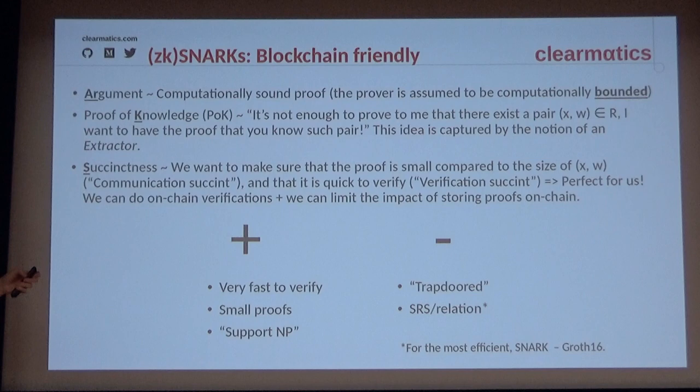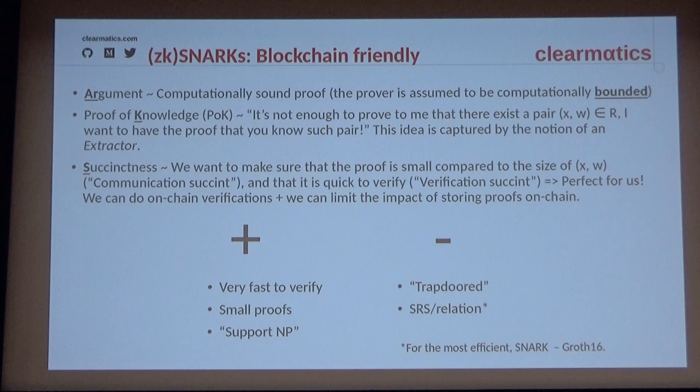You have an SRS per relation, but work on universal SNARKs is an active research area — people have published Plonk, Sonic, Marlin, and others, and we're making tremendous progress. That said, the most efficient SNARK remains Groth16, and for specific statements where you want very small proofs and very fast verification, you're often better off sticking with Groth16.